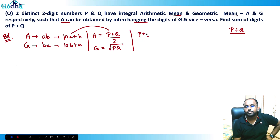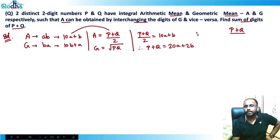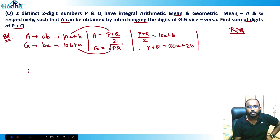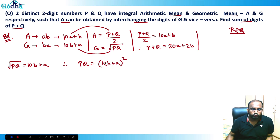Equating: p plus q divided by 2 equals 10a plus b, therefore p plus q equals 20a plus 2b. This is the value we need to find — the sum of digits of p plus q. For the geometric mean: the square root of pq equals 10b plus a. Squaring both sides gives pq equals (10b plus a) squared.